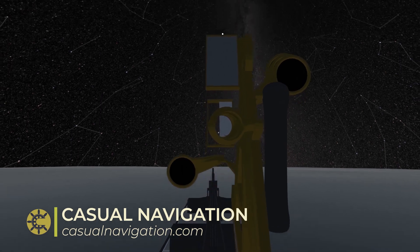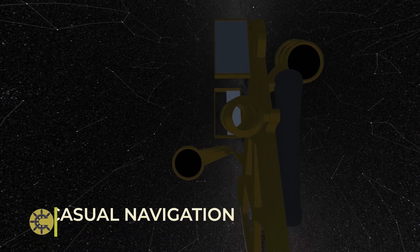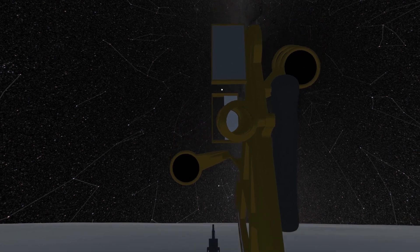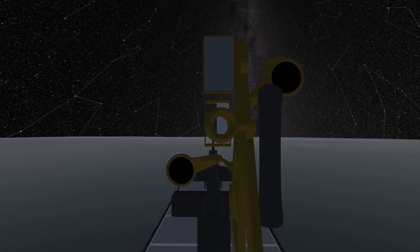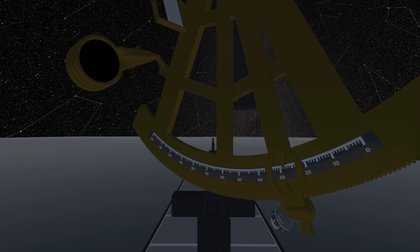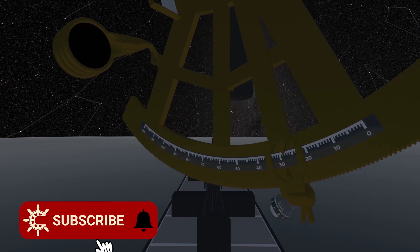For position fixing, it's all about comparing the actual altitude you measure to the calculated altitude that you would expect if you were in the position that you estimate. To do all of this, you need to be able to calculate the altitude of stars, and that's what we're looking at today.